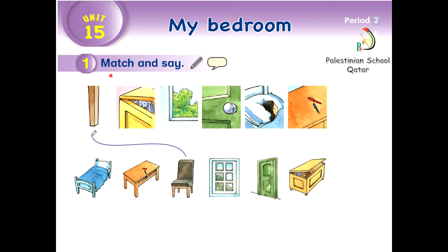My dear students, open your books, page 23, and let's do activity number one: Match and say. Look at the pictures. Let's say the name of the items. What's this? It's a bed. It's a chair. It's a window. It's a door.